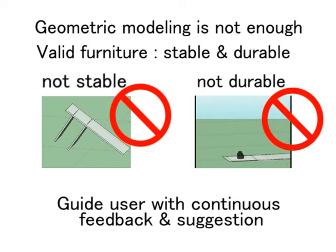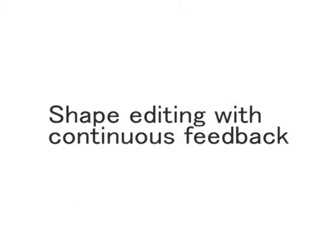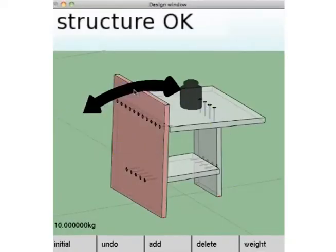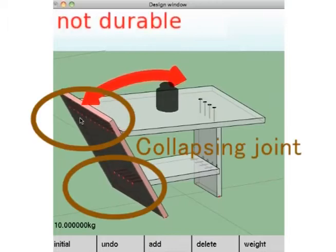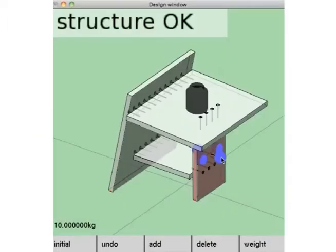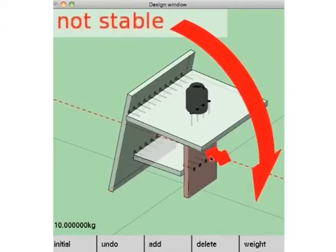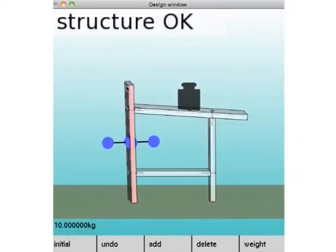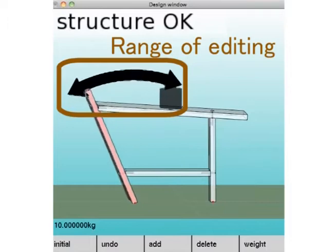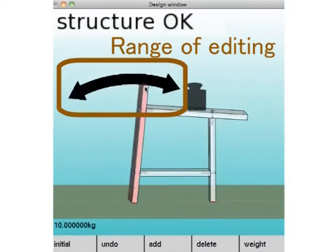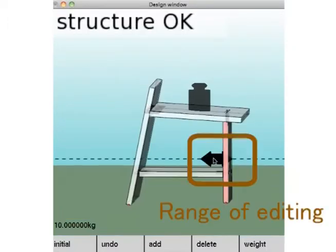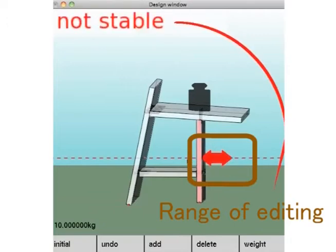Our computational framework guides users to a stable and durable design with continuous feedback and suggestions. When the model breaks at a joint due to a user edit, the system highlights the joint in red. When the model collapses, the system shows a big red arrow mark. The system also indicates the valid range of editing parameters as arrows, reducing the number of trials needed.